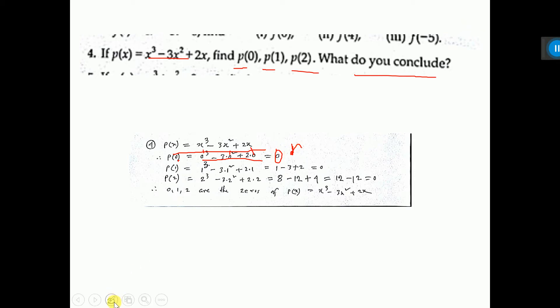Then you do the next one. What is that? P(1). That means instead of x, you have to put 1. So, 1 cubed, 3 into 1 square, 2 into 1. So, 1 minus 3 plus 2, that is 3 minus 3, 0.